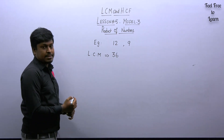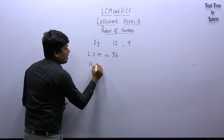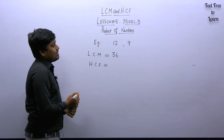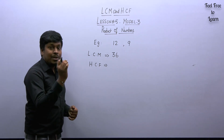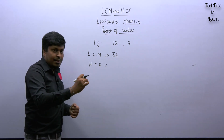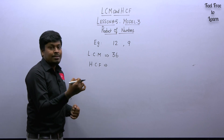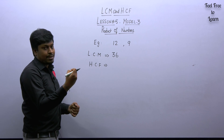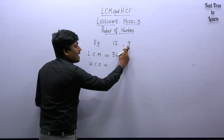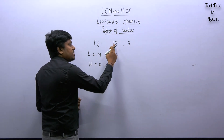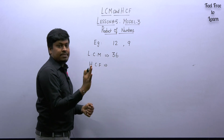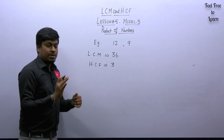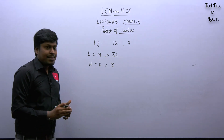Next, our target is to find the HCF. For HCF, the shortcut is: take the smallest number, write down all its factors, and check that the remaining numbers are divisible by those factors. The factor of 9 is 3. Is 12 divisible by 3? Yes, it is. So HCF of the numbers is 3.